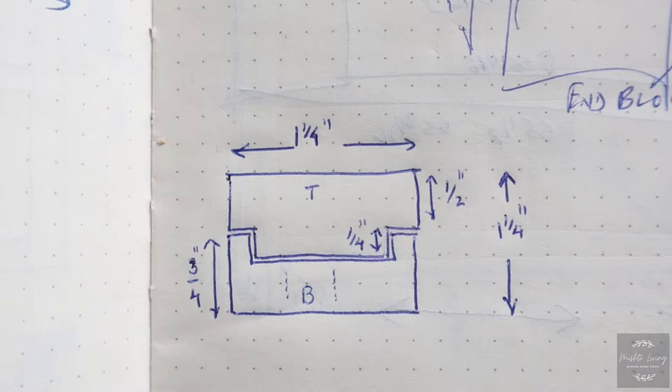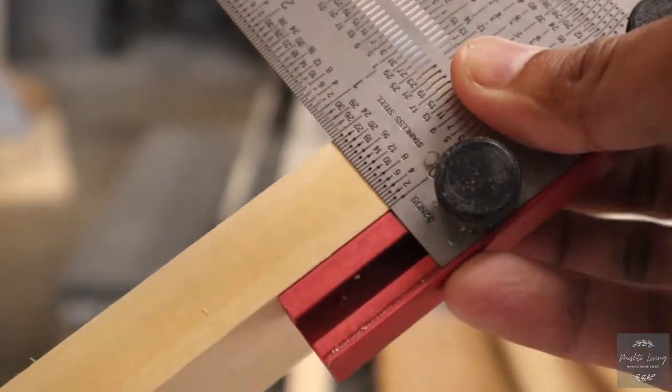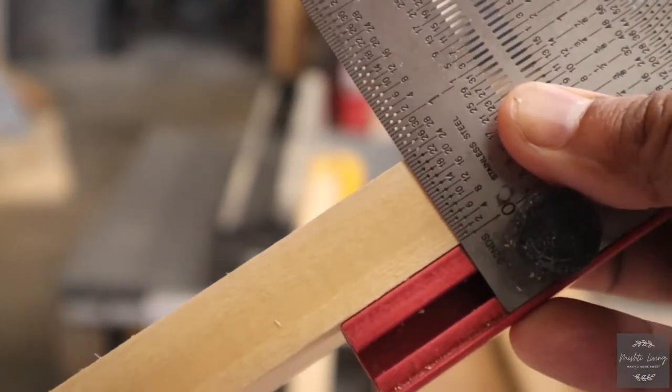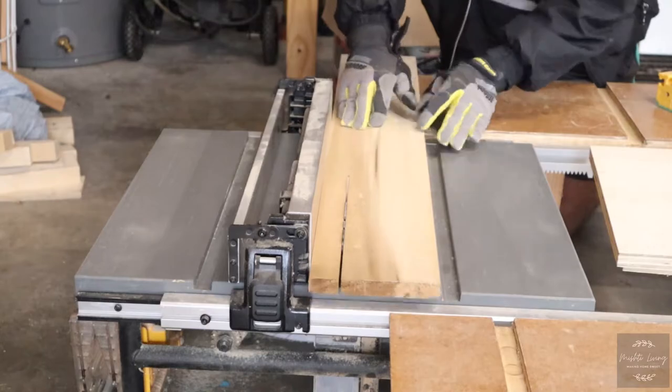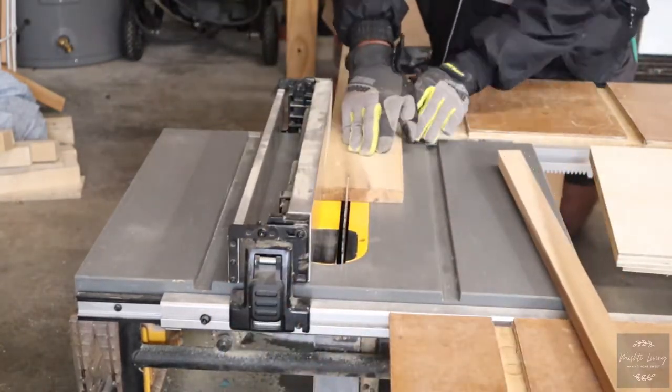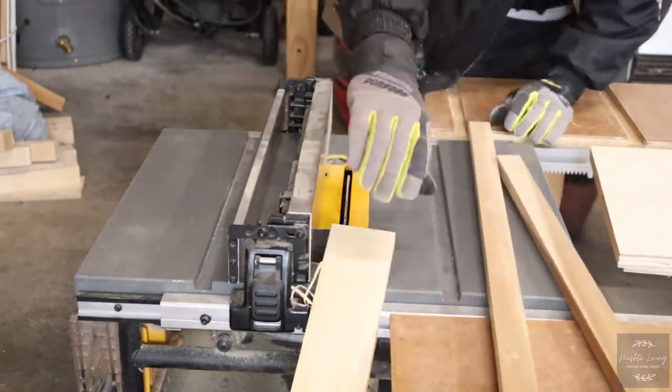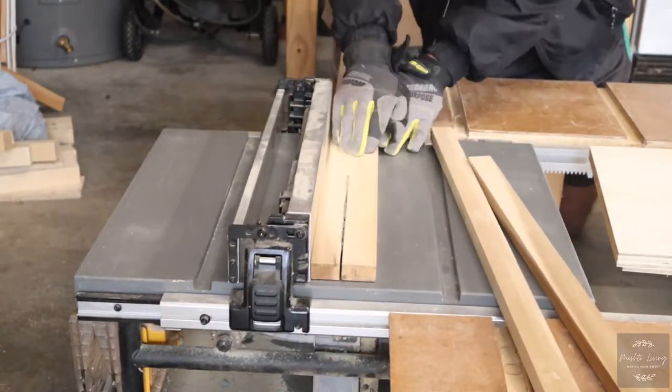I use three quarter of an inch thick poplar stock from the local box store. I run it through the table saw and get three identical pieces that are one and one quarter inch wide. Two of those pieces will be the tongue and groove, and I'll explain later why I had the third piece.